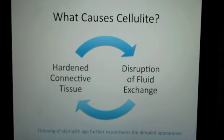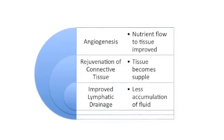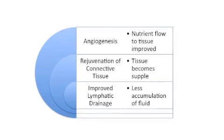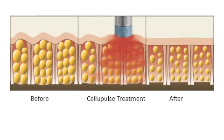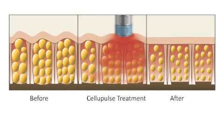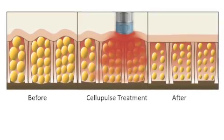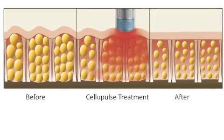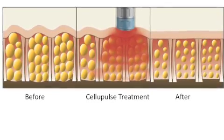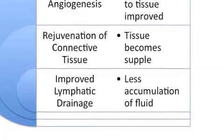How does CelluPulse technology work? It works by correcting the underlying causes of cellulite. Through a process called angiogenesis, or growth of new arterial blood vessels deep within the tissue, that hardened connective tissue is able to repair itself. This is not instantaneous — it takes several weeks after treatment to begin this process and continues to improve over several months. Once the connective tissue regains some of its flexibility, it's no longer pulling down the skin and creating that dimpling effect. With more supple connective tissue, the lymphatic and venous systems are also better able to perform their tasks of draining fluids out of the tissue, which slightly slims the treated area as well.